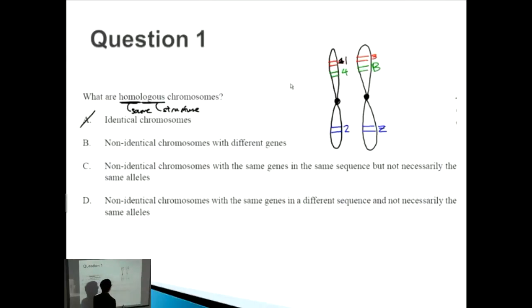So they're just the same types of chromosomes, the same structure of chromosomes with the same genes in the same sequence but not necessarily the same alleles. That means that B and D are wrong. Non-identical chromosomes, that's correct, with the same genes, yes, in the same sequence, yes - see how it goes red, green, and blue - it won't get mixed up, but not necessarily the same alleles. The answer is C.